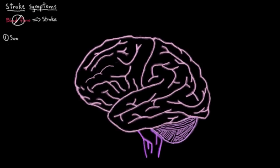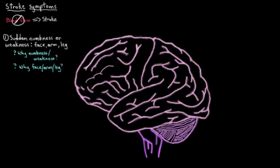So the first one we'll look at is sudden numbness or weakness of the face, the arm, or the leg. So immediately a few questions pop into your mind. Why would you develop numbness or weakness? Why commonly the face, the arm, or the leg? And also, does this happen on both sides of the body or is it just one side of the body? And these are all great questions.